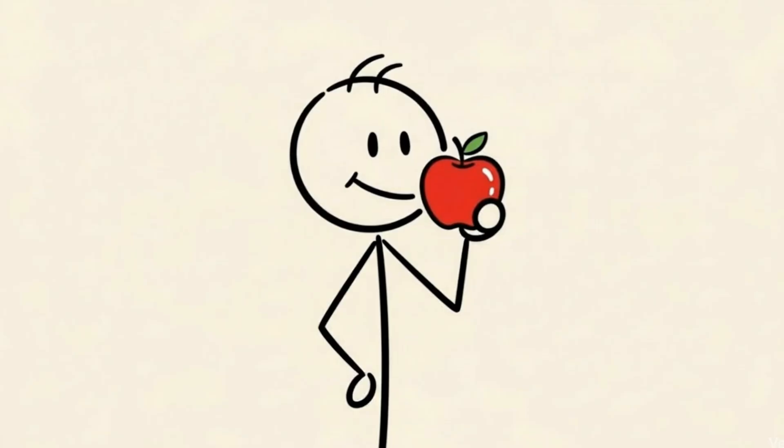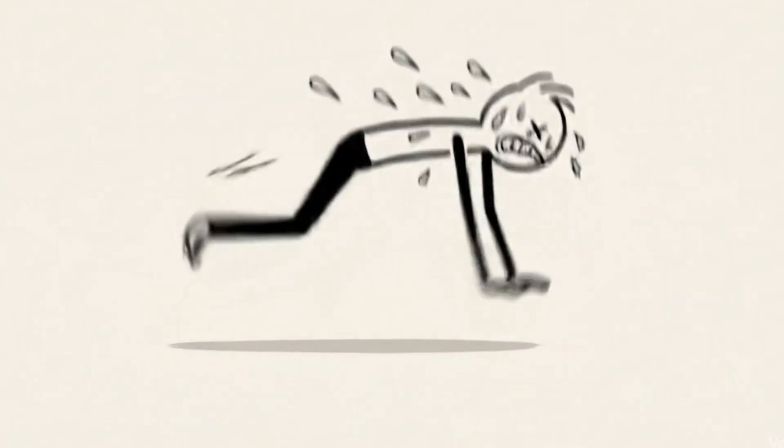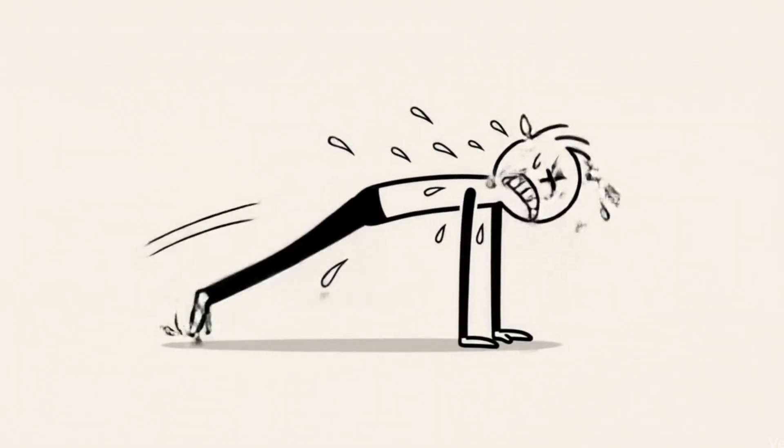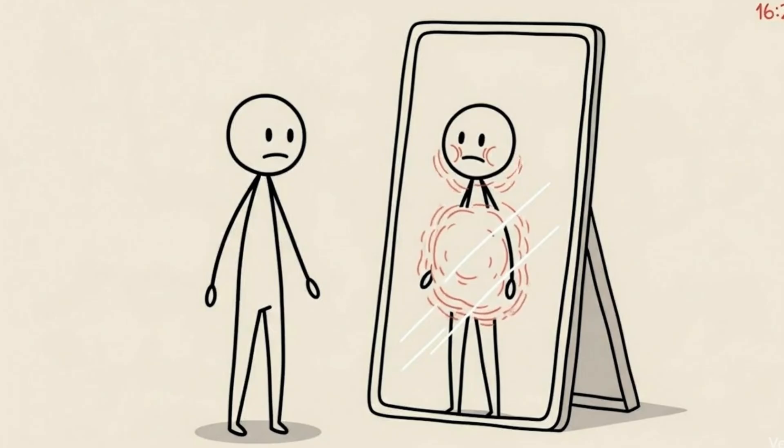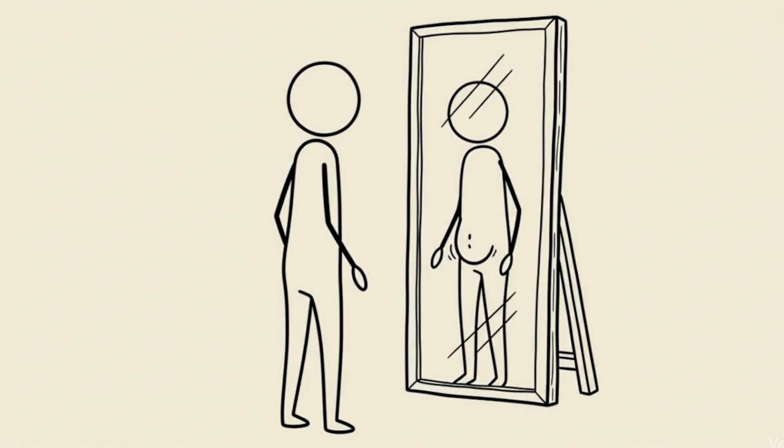You are doing everything right. You are eating clean, crushing high-intensity interval training sessions, and cutting calories. Yet when you look in the mirror, your body looks puffy, inflamed, and stubborn fat just hangs onto your midsection.